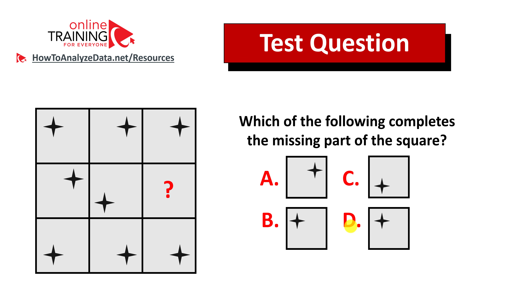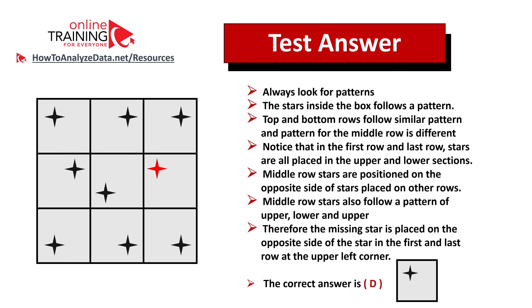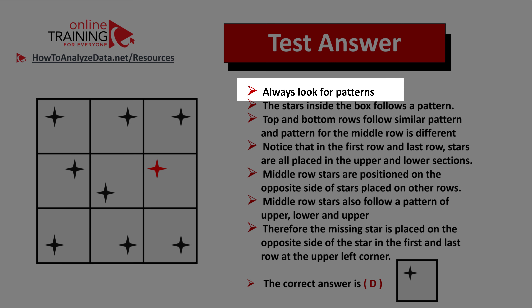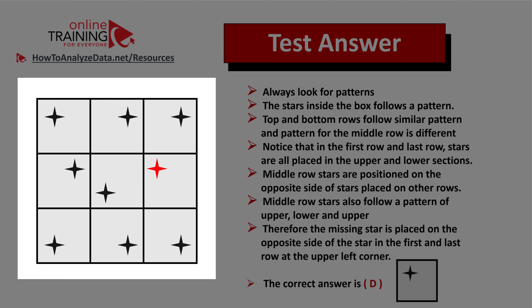Did you figure out the answer? Let's go ahead and jump straight to the solution. As usual, the best advice I can give you is always look for patterns. So there are multiple patterns going on. The first pattern is that the top and the bottom rows follow similar patterns.